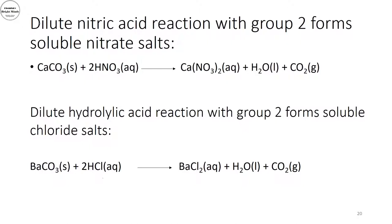Group 2 carbonates also react with dilute hydrochloric acid to form soluble chloride salts. For example, barium carbonate reacts with dilute hydrochloric acid to give barium chloride — which is soluble — water, and carbon dioxide.